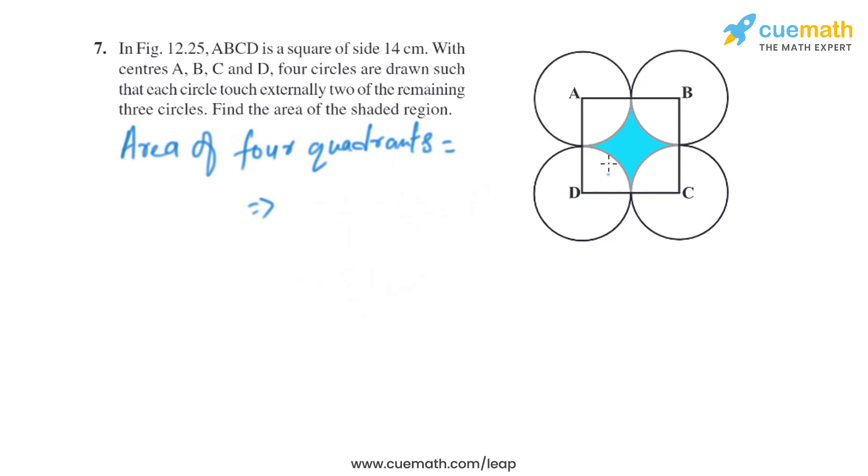All four quadrants are identical with the same radius, so we multiply the area of one quadrant by 4: 4 × (77/2) = 154 square centimeters. This is the total area of the four quadrants.